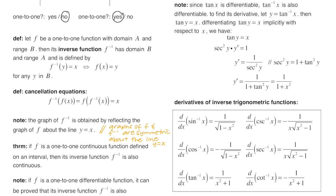A similar process applies for tangent inverse. Since tangent is differentiable, tan inverse is also differentiable. Let y equal tan inverse of x, so tan of y equals x. Differentiating implicitly gives secant squared of y times y prime equals one, so y prime equals one over secant squared of y. Using the Pythagorean identity secant squared equals one plus tangent squared, and substituting tangent of y equals x, we get one over one plus x squared. This is the derivative of tan inverse of x.